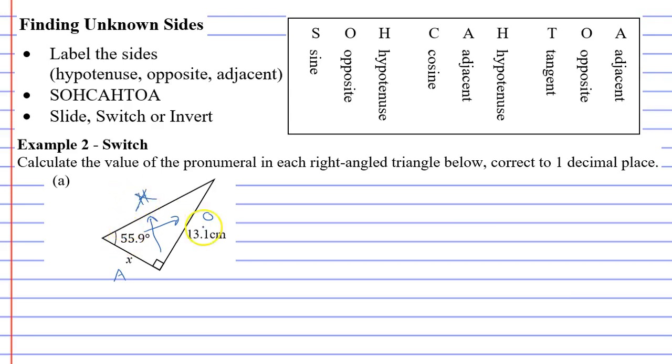And we're going to cancel out the h, because it doesn't have any numbers or pronumerals next to it. We're using O and A. And when we look at our acronym, you'll notice that O and A is at the very end. So we're going to use the last three letters of our acronym. Okay, so what does the T stand for? T stands for tangent. We just write the first three letters. We write tan.